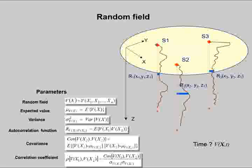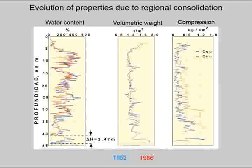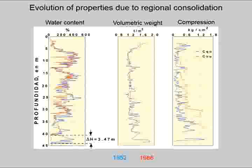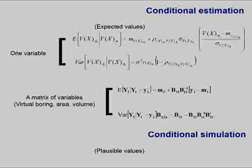These random fields are also variable with time due to the subsidence phenomenon. This slide shows the evolution of properties due to regional consolidation. Between two different dates — in that case 1952 and 1986 — we notice substantial variation of the thickness of the clay layer, but also of the water content, volumetric weight, and compressive strength.